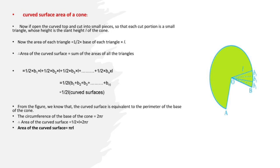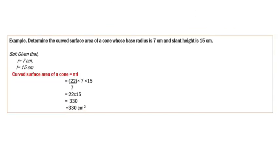The 2s get cancelled. So area of curved surface is 1/2 into L into 2πR, and after cancellation the remaining is πRL. So that is why our formula is: area of the curved surface equals πRL. See one example: determine the curved surface area of a cone whose base radius is 7 centimetres and slant height is 15 centimetres. Given: radius R equals 7 and slant height L equals 15. Curved surface area equals πRL, and pi value we take as 22/7. So here 22/7 into 7 into 15 — the 7s cancel, giving 22 into 15, that is 330. So the curved surface area of the cone equals 330 square centimetres.